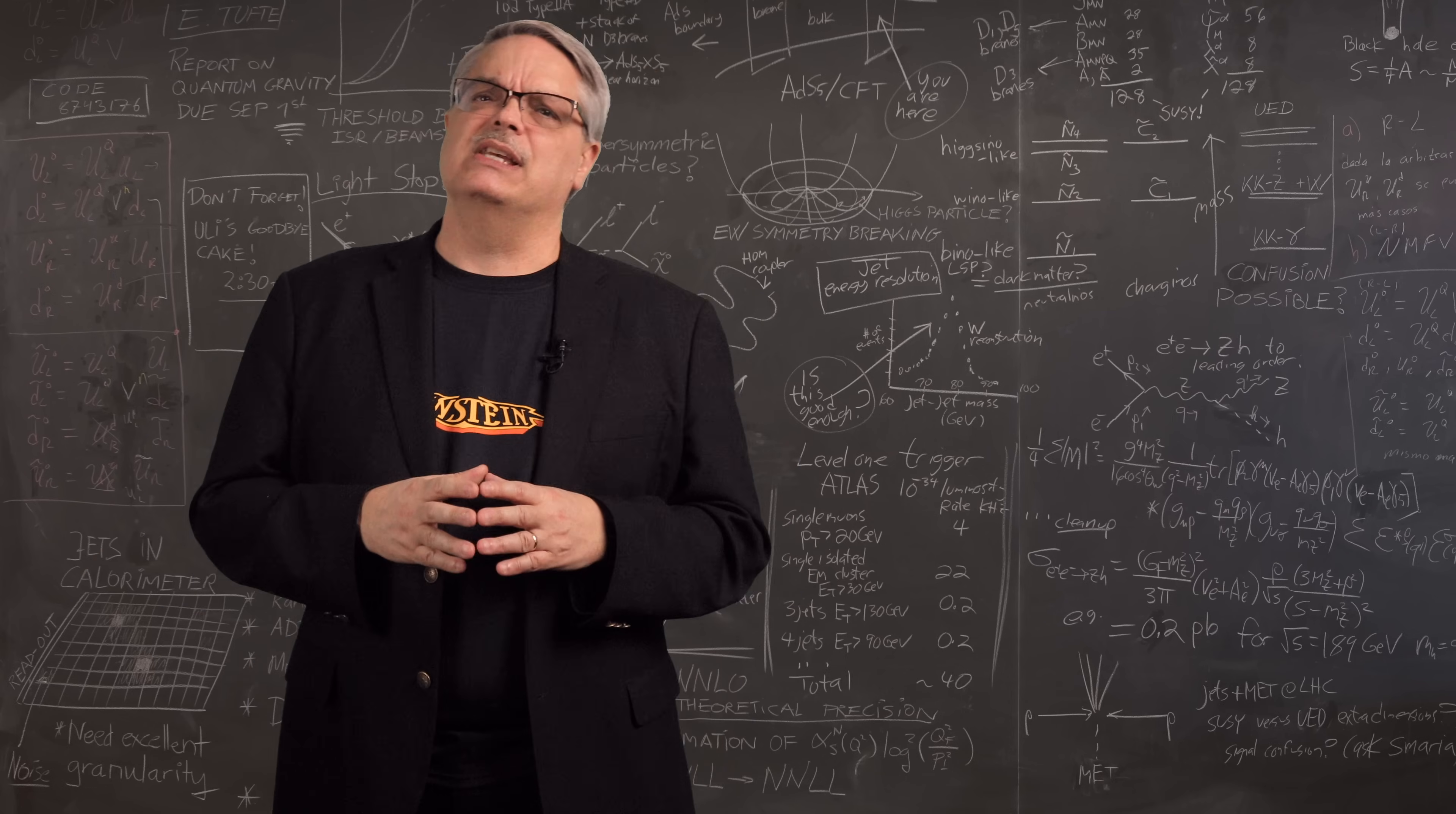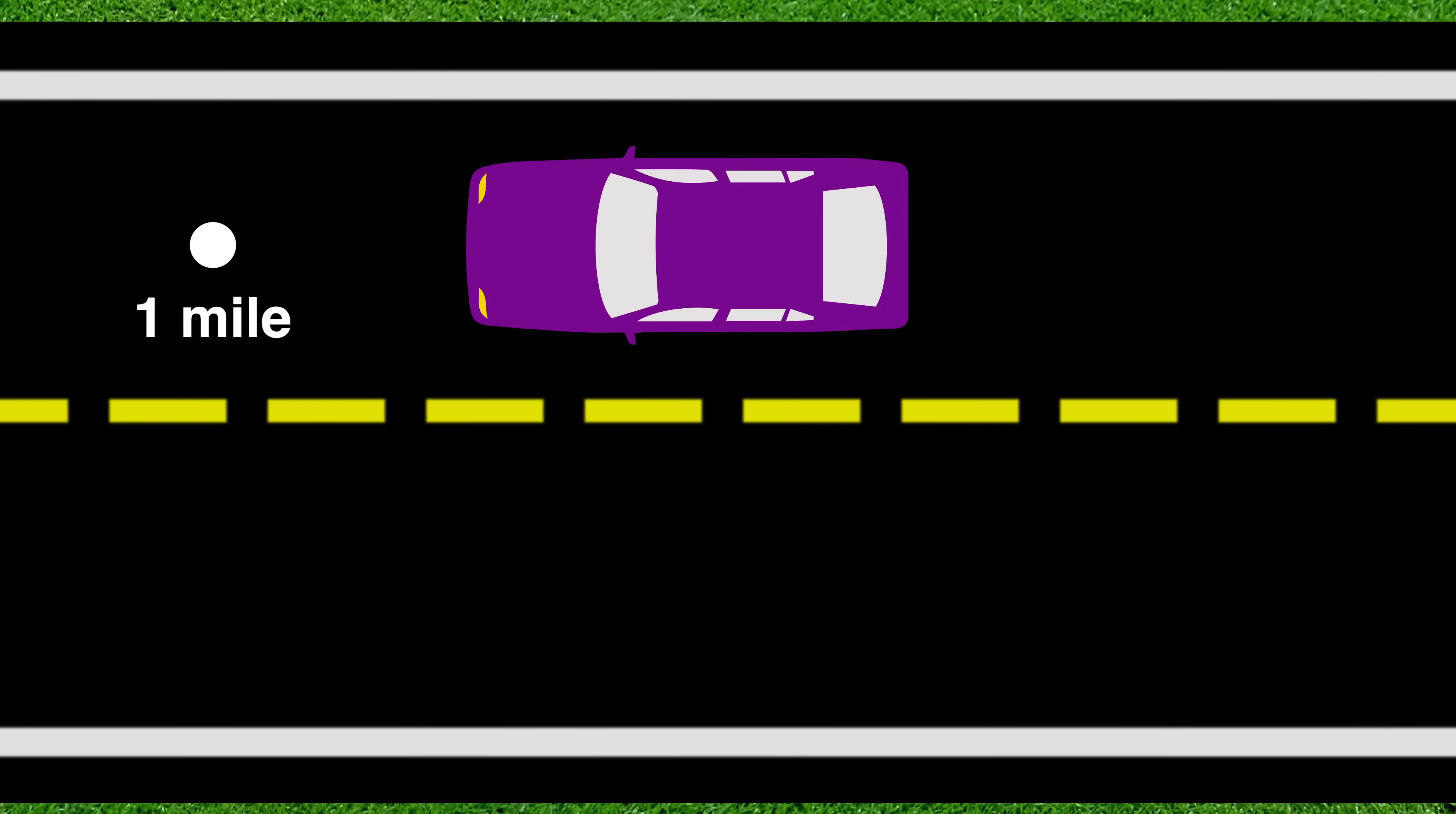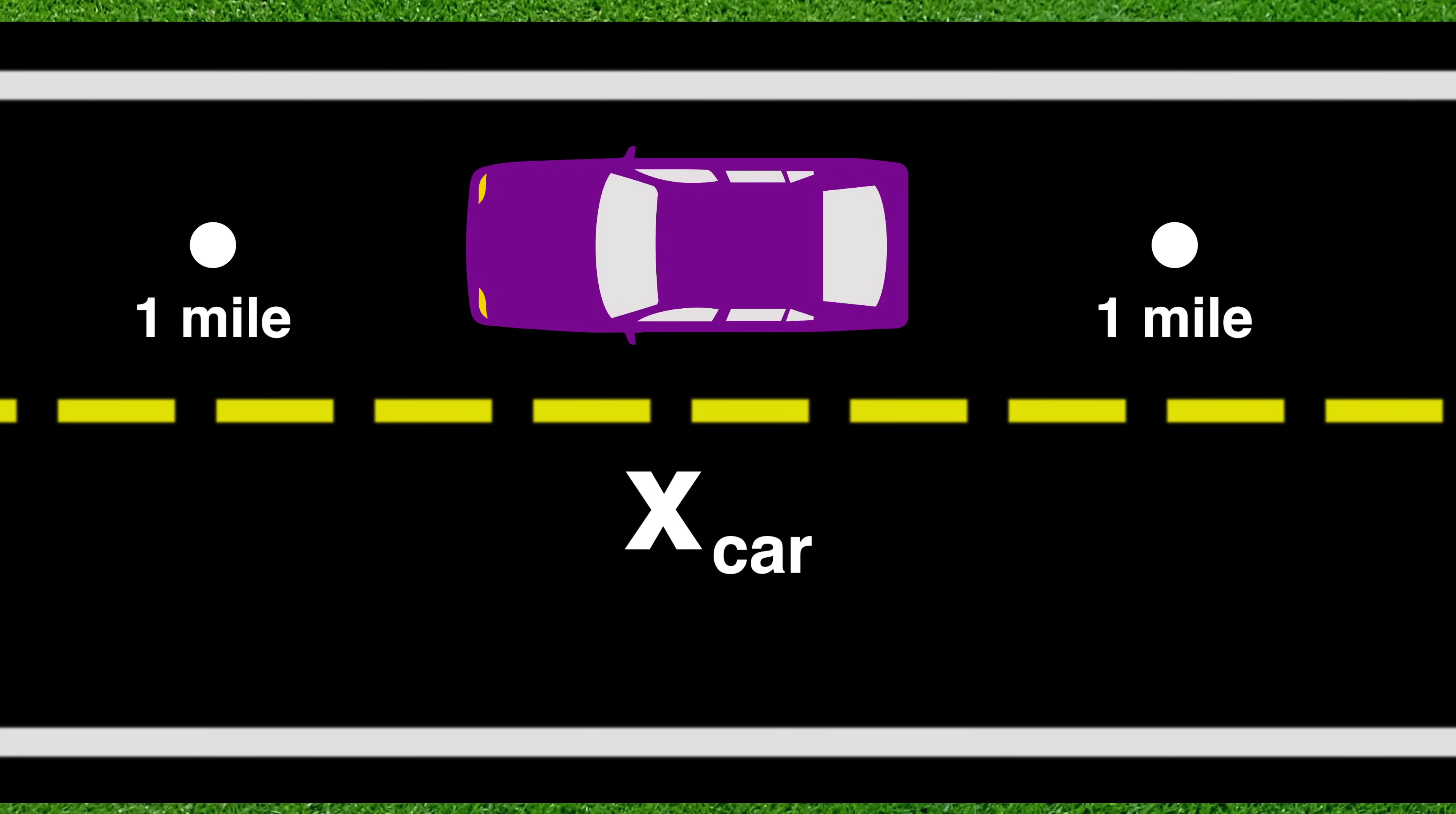So let's flesh this out a bit. The car guy believes that he is stationary and the world is zooming by him. Not only that, he thinks that other positions are also stationary. For instance, the location a mile ahead of him is always precisely a mile ahead of him. It doesn't move. Likewise, the position a mile behind him is also stationary and unmoving. So he can specify any location using the symbol x and we'll add the subscript car to distinguish it from the standing guy.